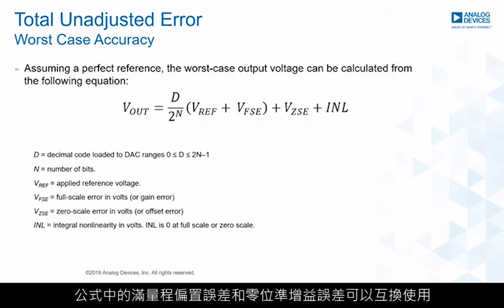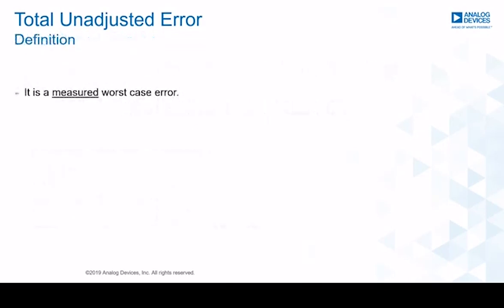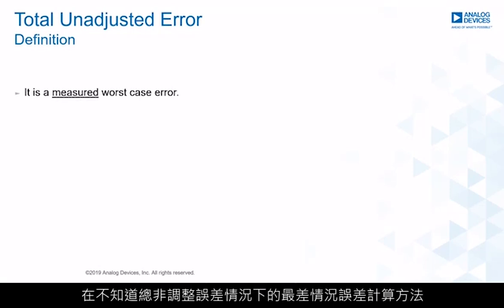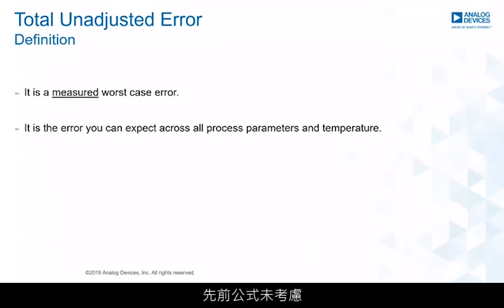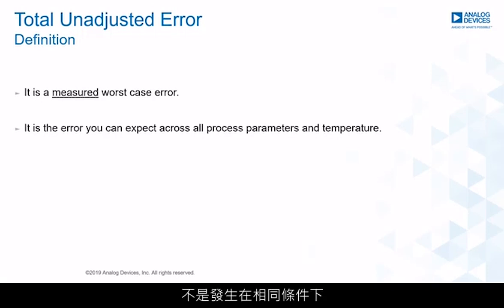The formula presented previously gives the worst-case error in the absence of a total unadjusted error specification. However, what it does not account for is the fact that the worst-case maximum specification of each error component will not occur at the same condition.